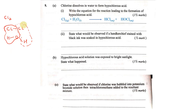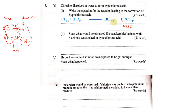Chlorine is a diatomic molecule, while water has a bent shape. During the reaction, the chlorine molecule will split. One chlorine atom will react with the hydrogen atom to form hydrochloric acid, and the remaining will form hypochlorous acid. Both of these are soluble in water, so we write them as aqueous. The equation is balanced on its own.